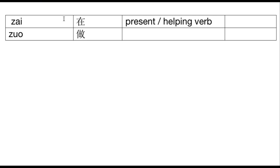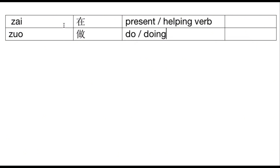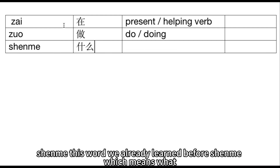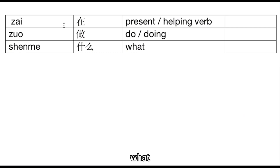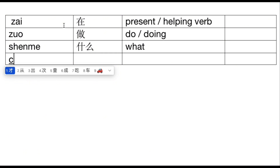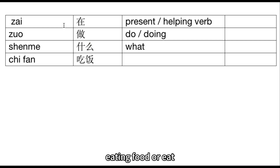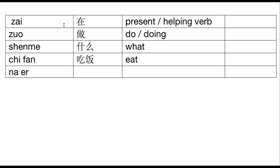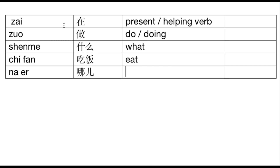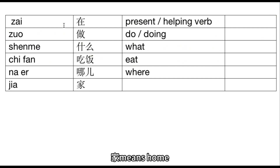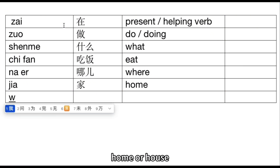The next word is 做 (zuò), which means 'do' or 'doing'. Then we have 什么 (shénme), which we already learned before — it means 'what'. After that, 吃饭 (chīfàn), which means 'eat' or 'eating food'. And 哪儿 (nǎr) means 'where', and 家 (jiā) means 'home' or 'house'.